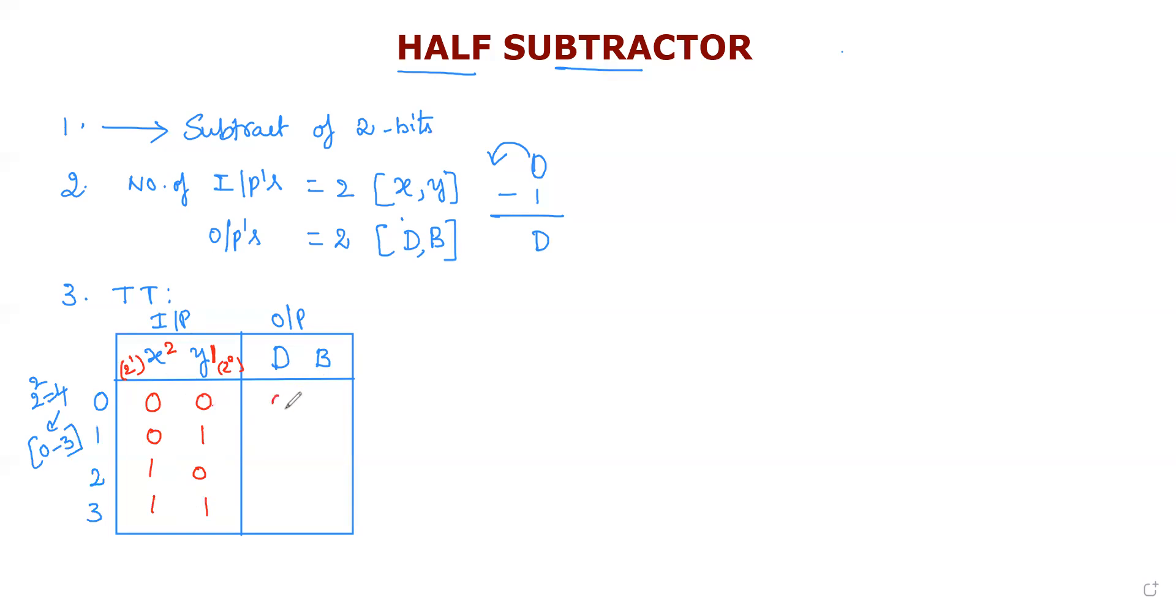Now let us write the output values. Zero minus zero is zero, there is no need of taking the borrow. Zero minus one: zero is the smaller value, so we take a borrow. This zero becomes two, and two minus one equals one for the difference, and borrow is one. Next, one minus zero becomes one and zero - there is no need of taking the borrow. One minus one is zero for subtraction, the difference value, and the borrow should be zero.